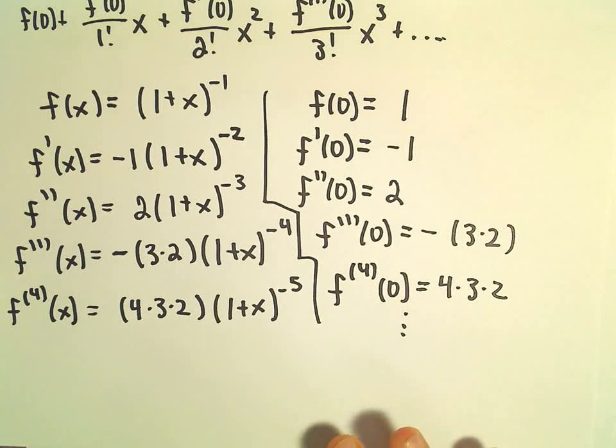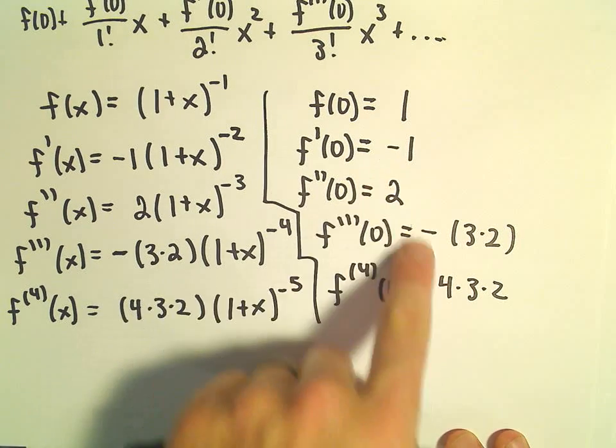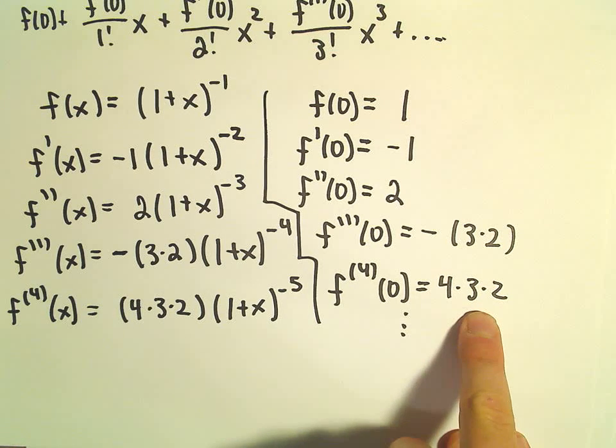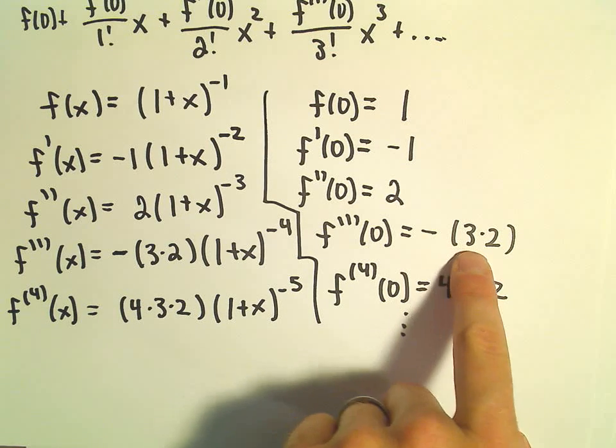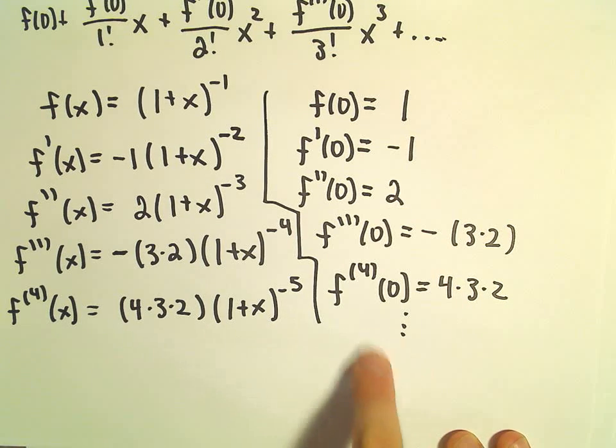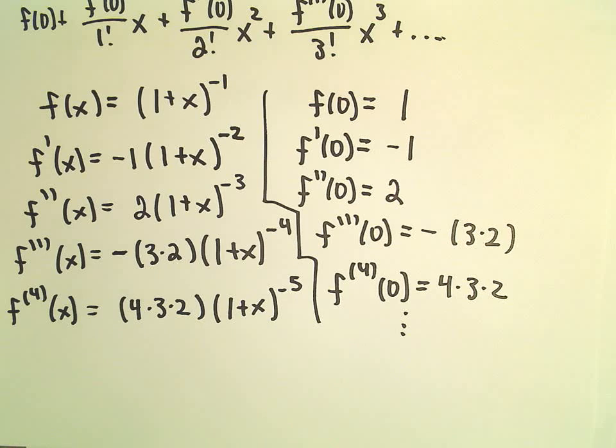So the reason why I don't multiply things out is, you know, it looks like to me we're getting things involving factorials, right? So this is 4 factorial, 3 factorial, yeah there's a negative in there, but we can deal with that. 2 factorial, the next one we would get a 5 factorial.